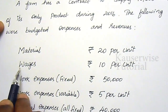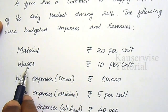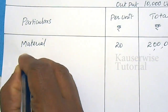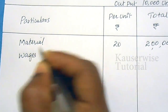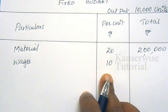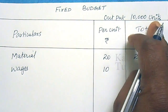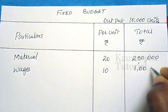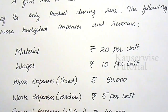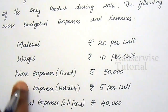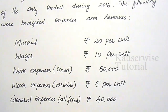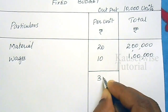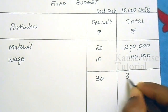Next is wages, which is also a direct expense directly involved in the production process at ₹10 per unit. For 10,000 units, wages total ₹1,00,000. There is no direct expense in this problem. Prime cost per unit is therefore ₹30, and prime cost total amount is ₹3,00,000.